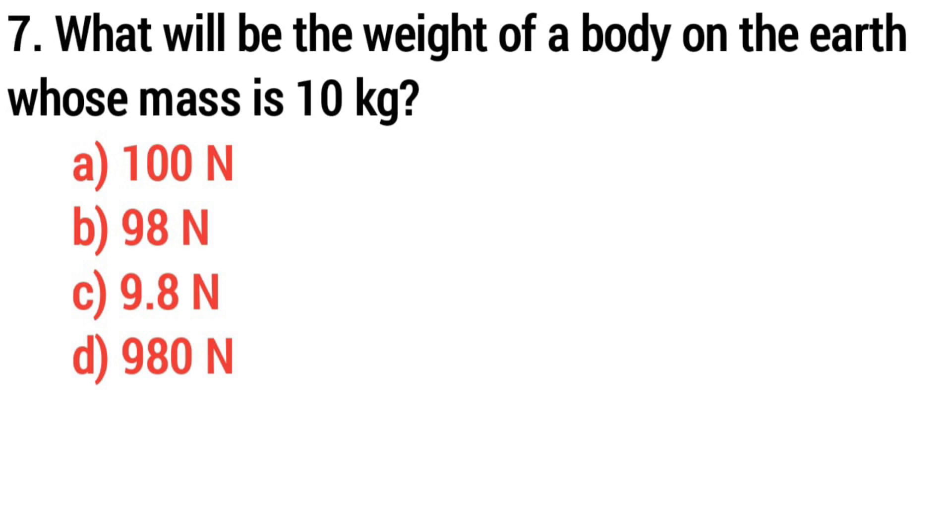Question 7. What will be the weight of a body on the earth whose mass is 10 kg? The characteristic is Option C, 9.8 N.